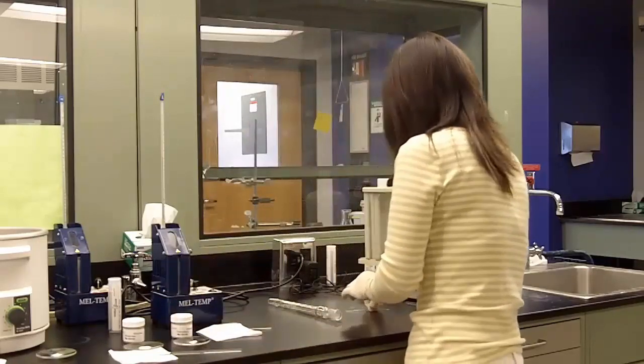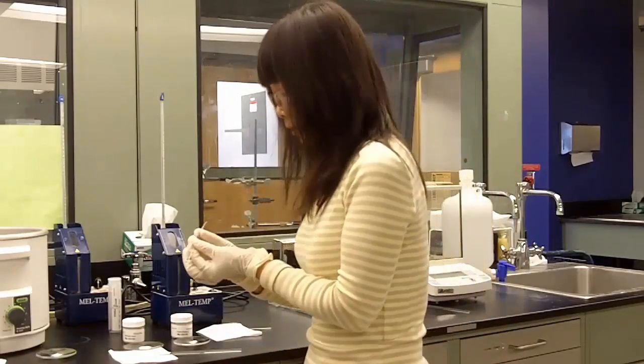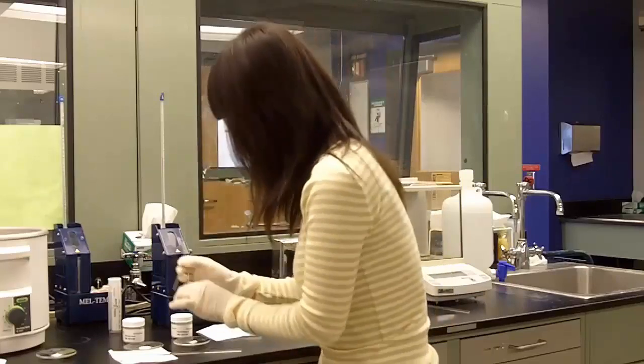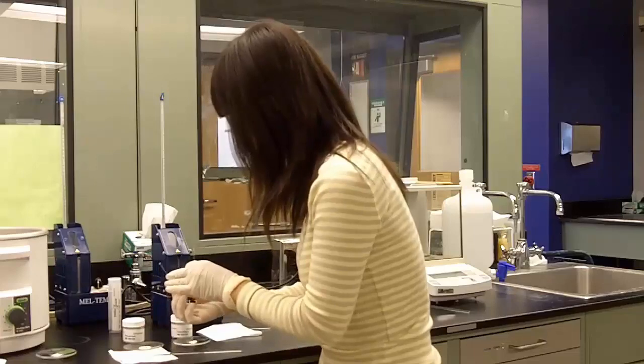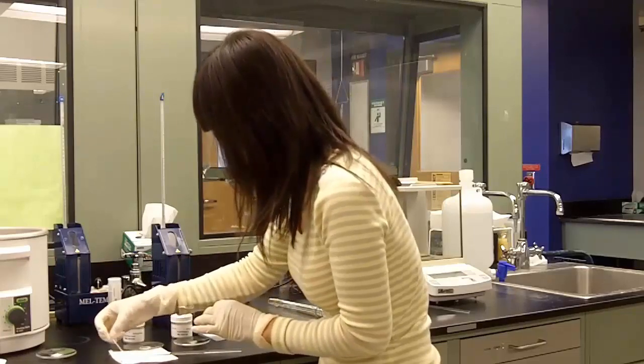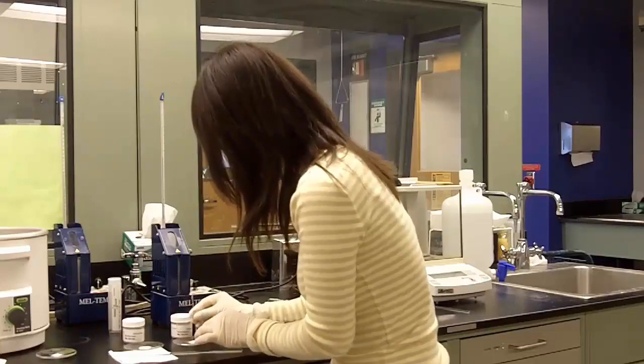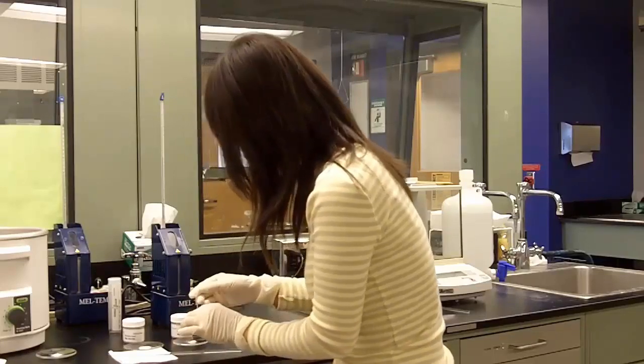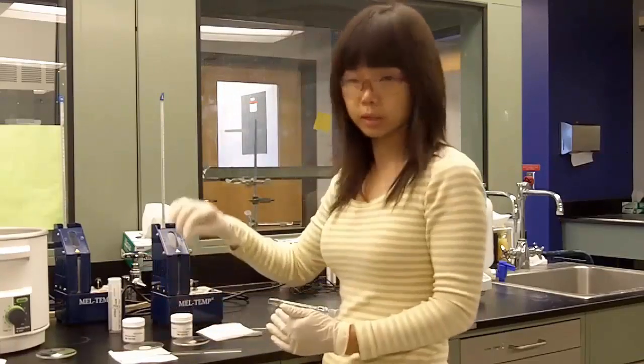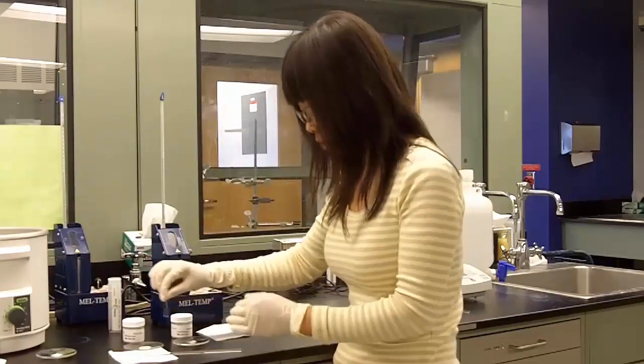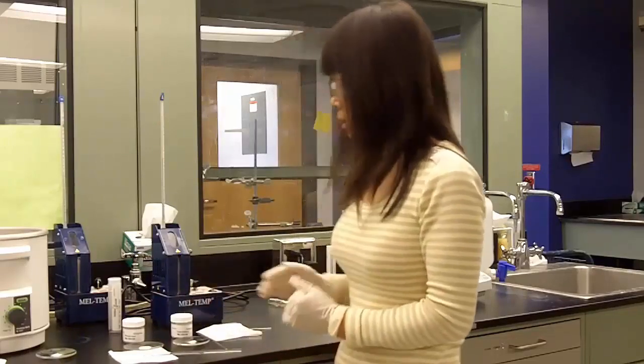And after mixing the samples, you take two capillary tubes and pack the sample into the capillary tube using the method we mentioned. Make sure you can identify which tube has which sample. This is very important. Put the right identity on the tube. So now we are ready to take a mixed melting point.